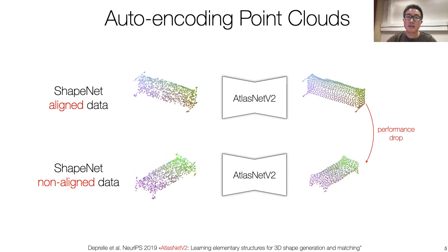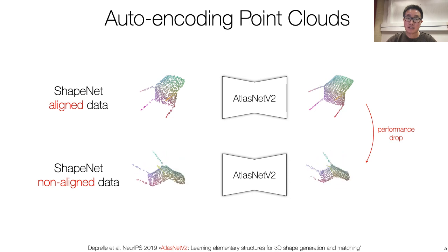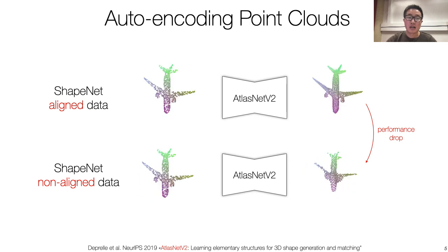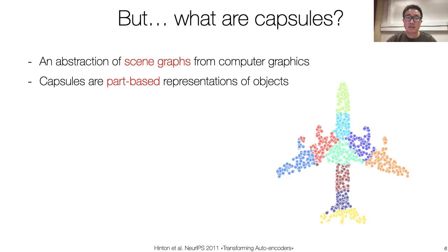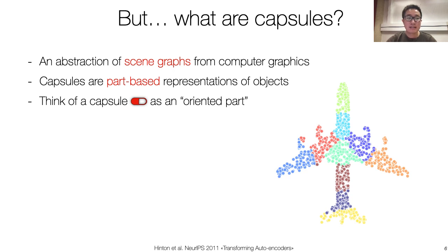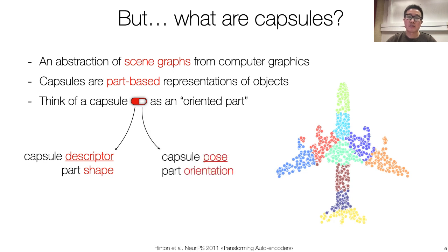In our work, we learn to canonicalize shapes and then perform downstream tasks in the canonical space. We achieve this objective by leveraging capsule representations. But what are capsules? At a high level, you can think of capsules as part-based representations — just think of a capsule as an oriented part. Each capsule has two parts: the capsule descriptor encodes the shape of the part, and the capsule pose encodes the orientation of the part. We learn capsule decompositions by noticing that capsules correspond to clusters in the point cloud. For example, the cluster of points close to the front of the airplane will form the cockpit capsule.